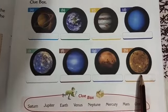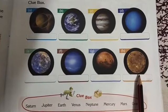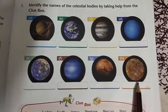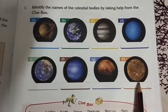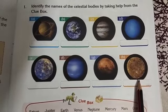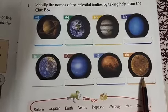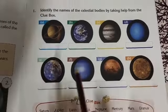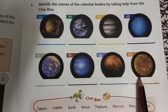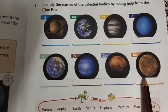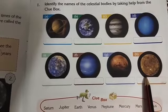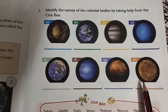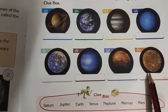Eight planets are there. You can see in the previous video — I told you about the solar system, what it is, what the sun is, and how many planets are there. Sun along with these eight planets and their satellites — all these planets have their own satellites — is known as the solar system. This is the family of the sun.